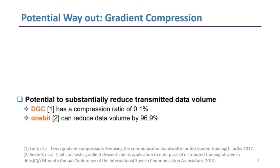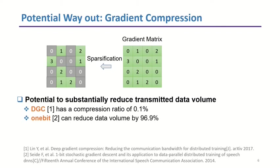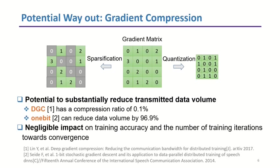Fortunately, gradient compression is an active research area and a general approach to address the tension. The gradient compression algorithms use the characteristics of the gradient matrix to compress, with the potential to substantially reduce transmitted data volume. For example, the algorithm DGC has a compression ratio of 0.1%. They often fall into two categories: one is sparsification, which leverages the sparsity of gradients and filters out insignificant elements; the other is quantization, which decreases the precision of each element. Many of these algorithms are either theoretically proved or empirically validated to impose only a negligible impact on training accuracy.